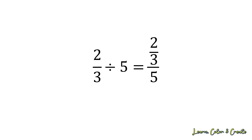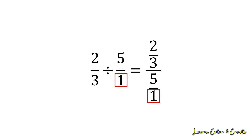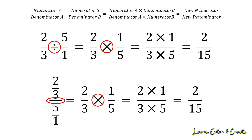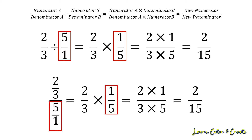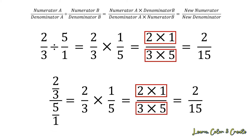Let's look at the next example: two-thirds divided by the whole number five. We first convert the integer five to a fraction by dividing by one. Then we write down the first fraction, two-thirds, convert division to multiplication, and flip five over one to one over five. Multiplying straight across: two times one gives a new numerator of two, and three times five gives a new denominator of 15, for a final answer of two-fifteenths.